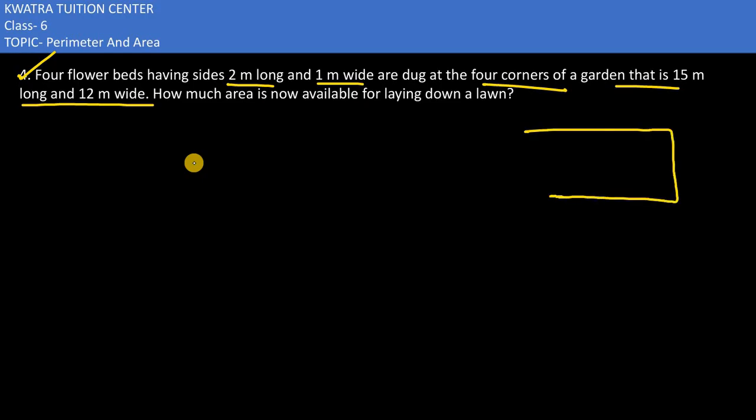There is a garden and its length is 15 and the breadth is given as 12. They are saying four flower beds are there on the corners of it and the measurement of each is 2 meters length and 1 meter wide. Now they are saying how much area is now available for laying down a lawn.